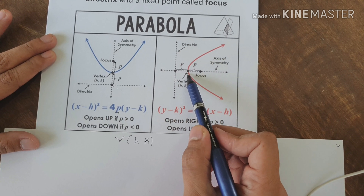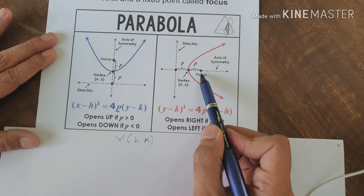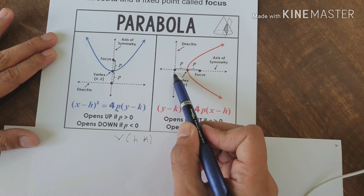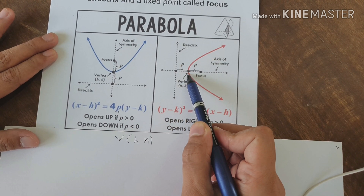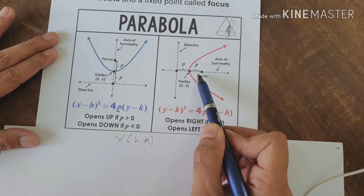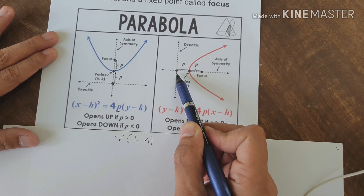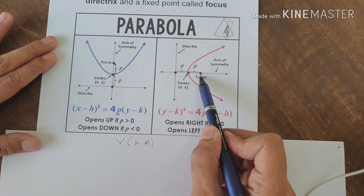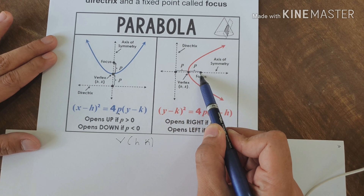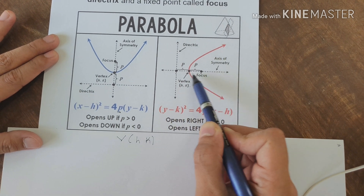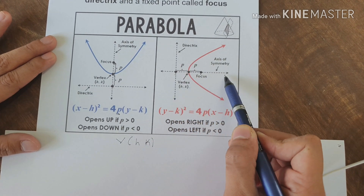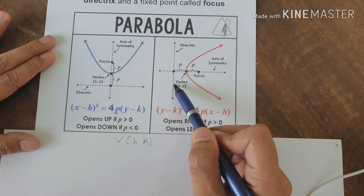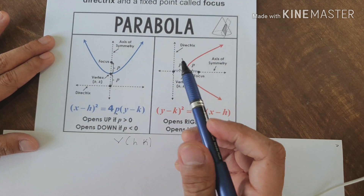This is the vertex, this is the focus, and this is the line of directrix. The vertex is the midpoint between focus and directrix. The focus tells us where is the opening of our parabola. The axis of symmetry divides the parabola into two congruent parts. And the directrix is a fixed line.